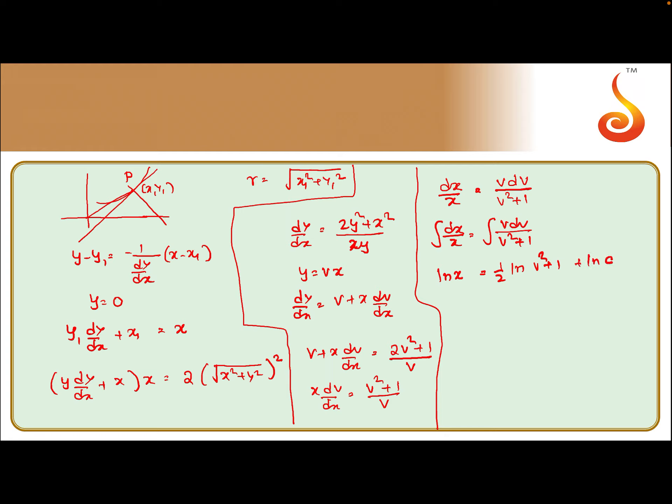Basically what we get is x = c√(x² + y²)/x. It passes through (1, 0), so 1 = c√1, so we get c = 1. Basically we get x⁴ = x² + y² as the required solution of the differential equation.